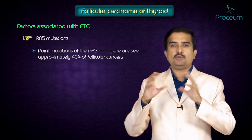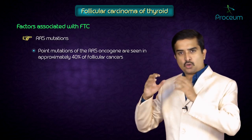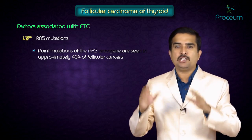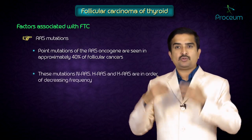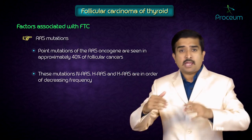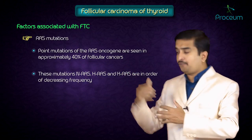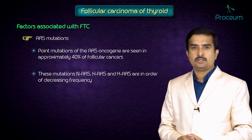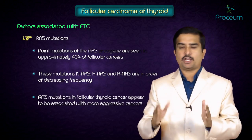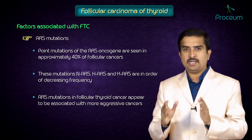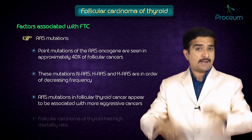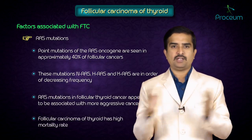Point mutations of the RAS oncogene are seen in approximately 40% of follicular cancers. These mutations — NRAS, HRAS, KRAS — occur in order of decreasing frequency. RAS mutation in follicular thyroid cancer appears to be associated with more aggressive cancers and has a very high mortality rate.